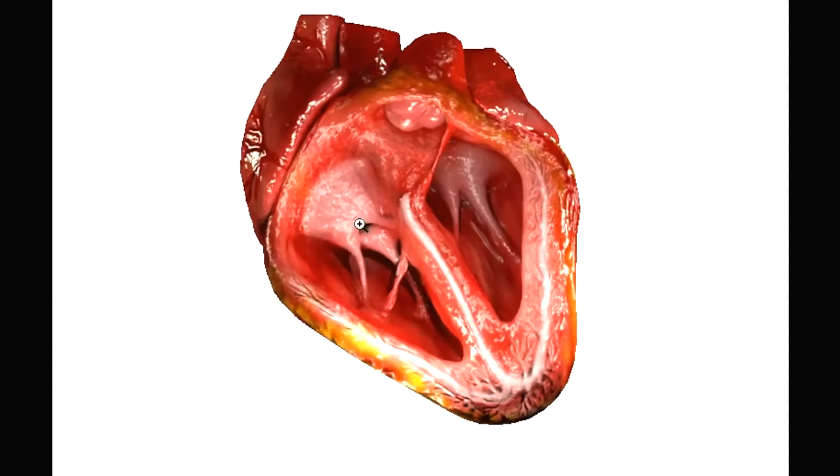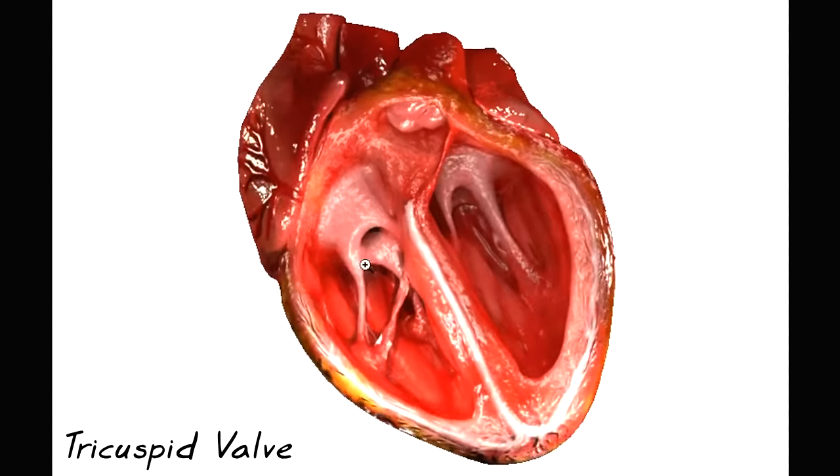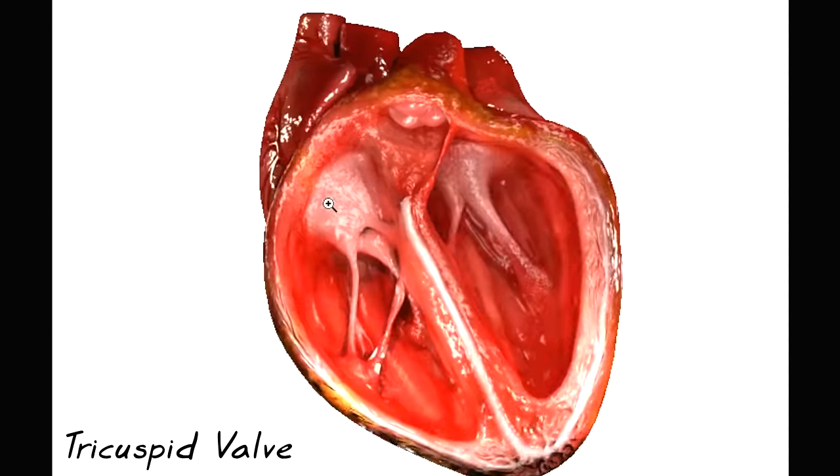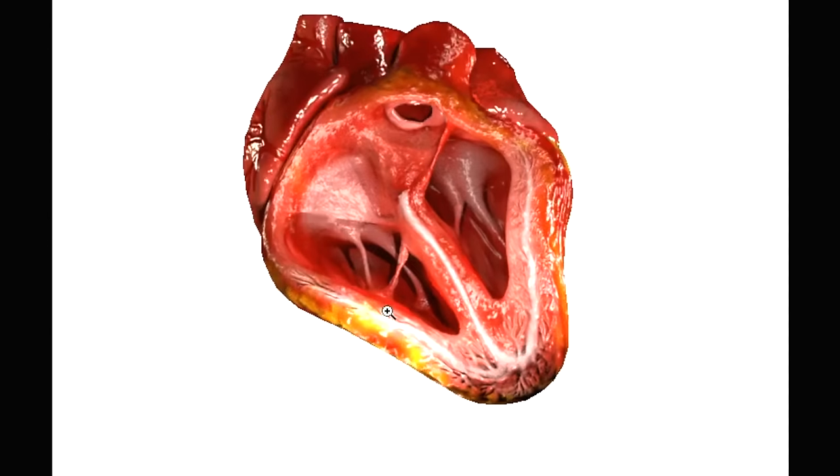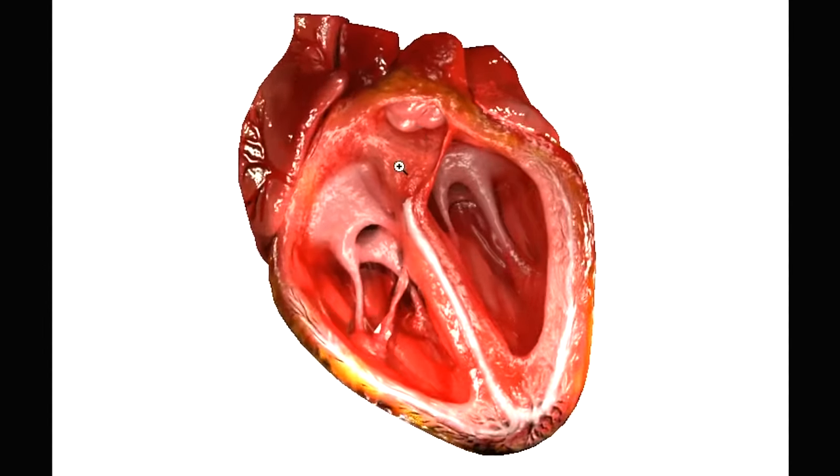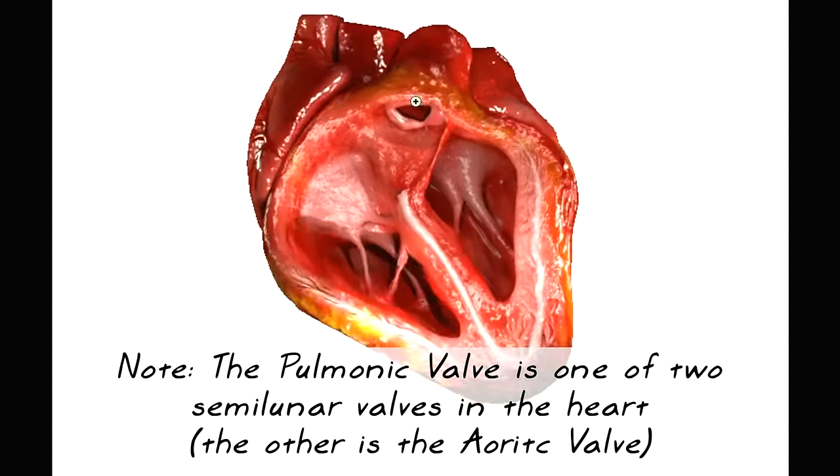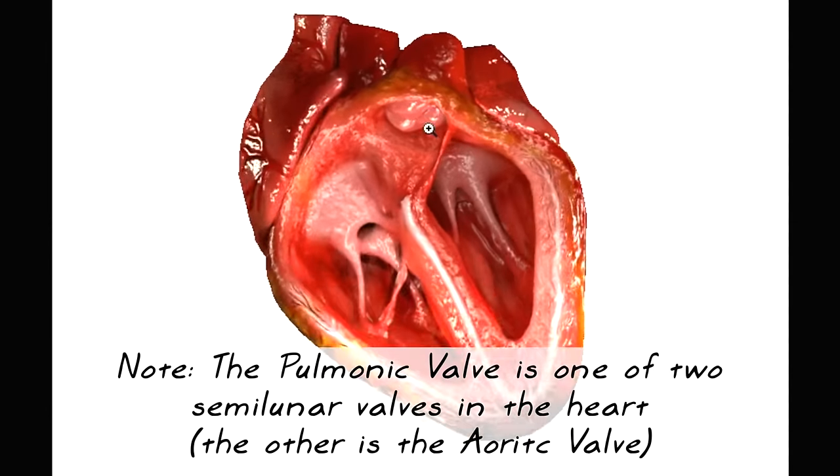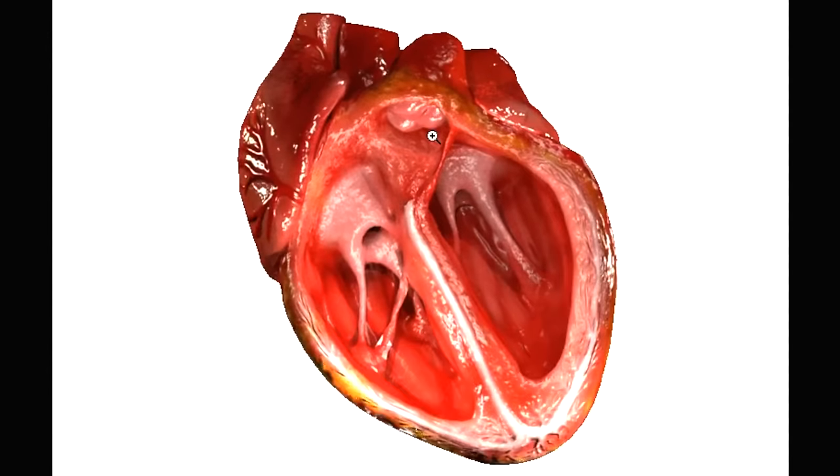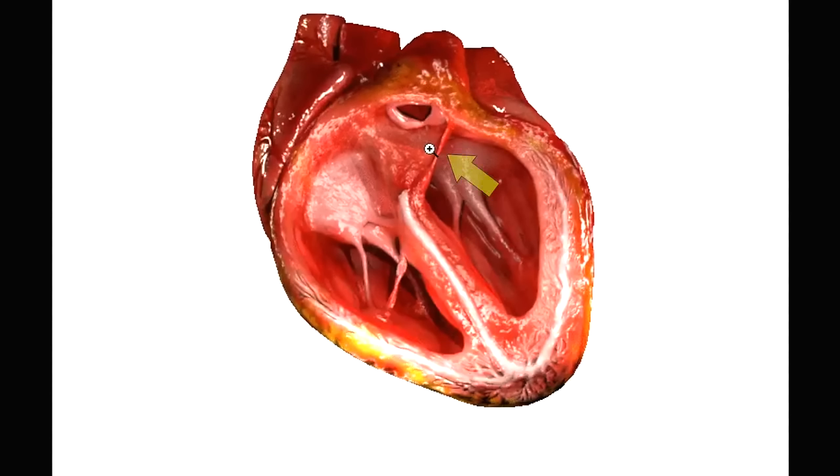Interestingly, what we've got is the tricuspid valve - this is a valve that allows blood to flow in from the right atrium into the right ventricle and then gets pumped out through the pulmonic artery. This is the pulmonic valve here, the semilunar valves as you can see, and then what you can't really see very well is the aortic valve which is here at the top, and this is where the left ventricle is pumping out.